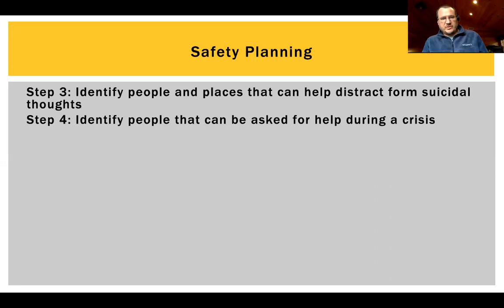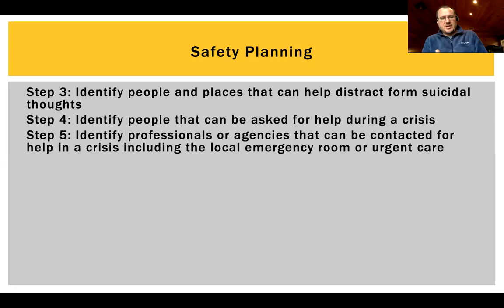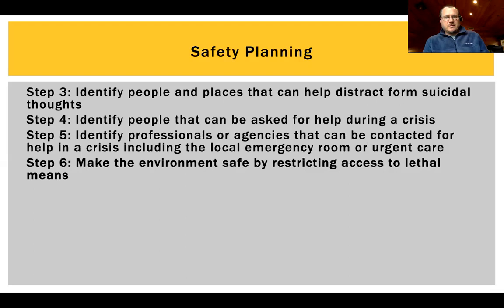The fourth step is identifying people you can ask for help. For students, this is often close family members or a best friend — someone they can disclose to that they're in a crisis and who would be able to help them navigate that crisis and keep them safe. Step five is identifying professionals or agencies that can be contacted — typically we give them numbers for the crisis text line, the national suicide prevention lifeline, the local emergency room, and all those phone numbers so if they need to reach out while in crisis, they can do that.